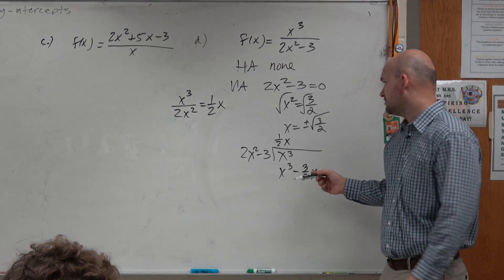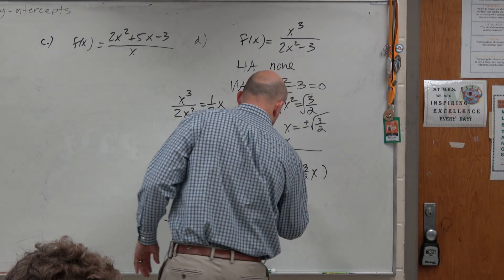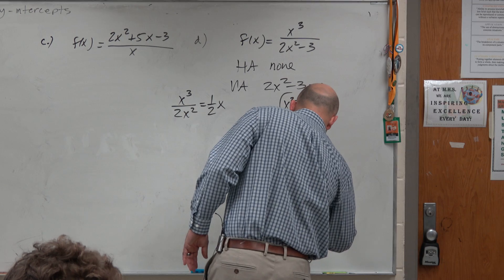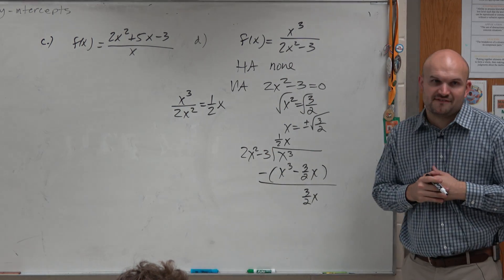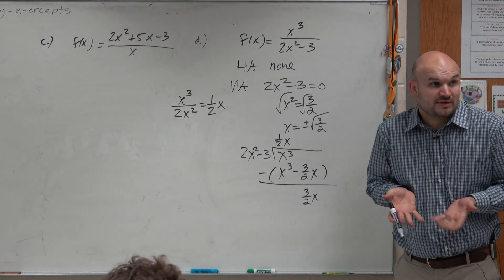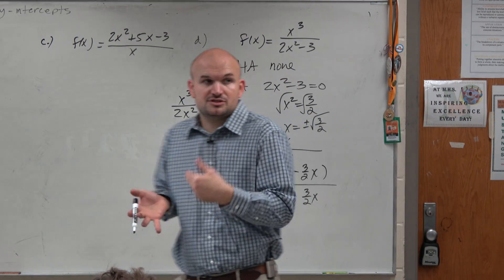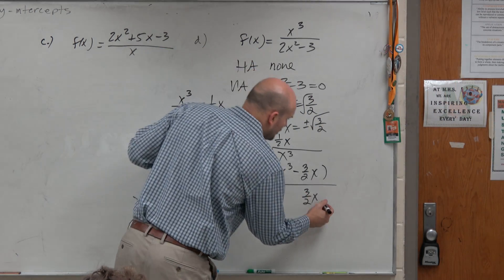Does 2x squared, oh sorry, anyway, sorry, subtract our rows, and we get a positive 3 half x. Does 2x squared divide into 3 halves x? No. So therefore, this is going to be our remainder.